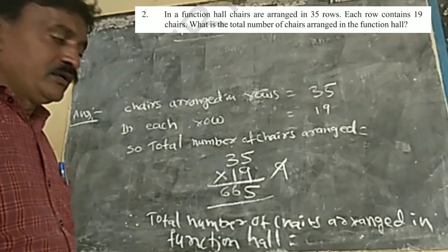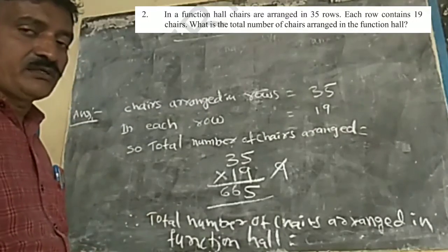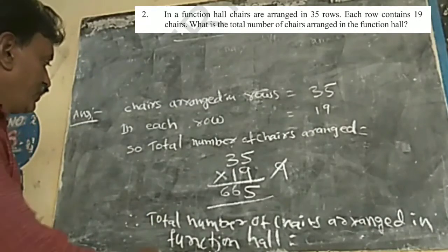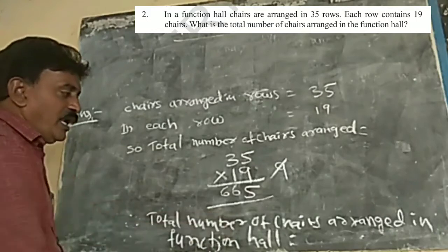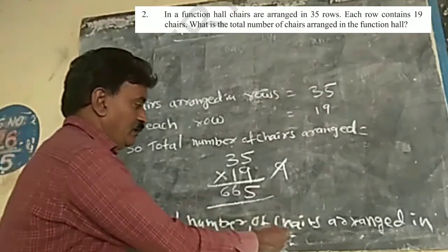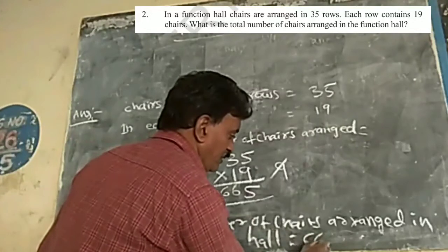So there are 665. So there are 665 chairs in the function hall. So the answer is the total number of chairs arranged in the function hall, 665.